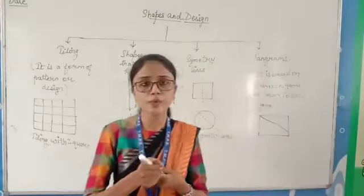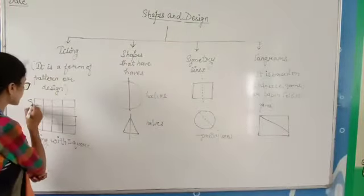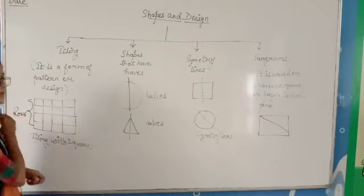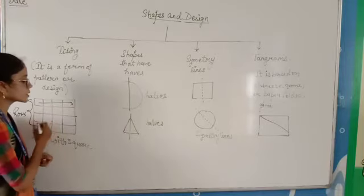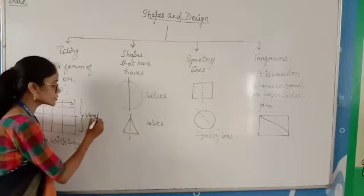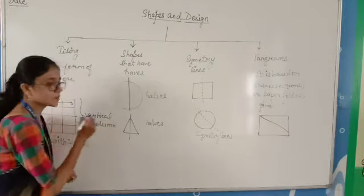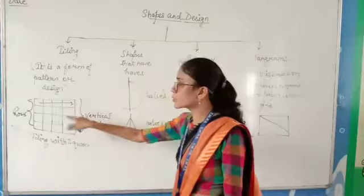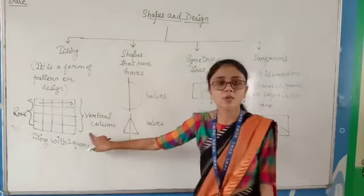Yesterday I told you two points in this. First, this is a row — the horizontal form is called a row. And the vertical form is known as a column. So the horizontal form is called row and the vertical form is known as column.